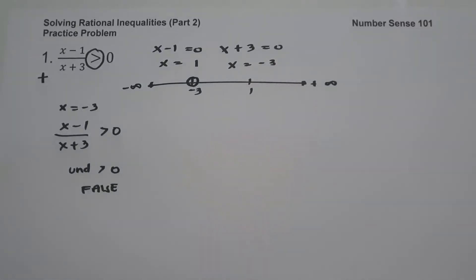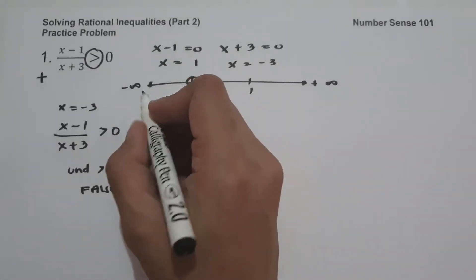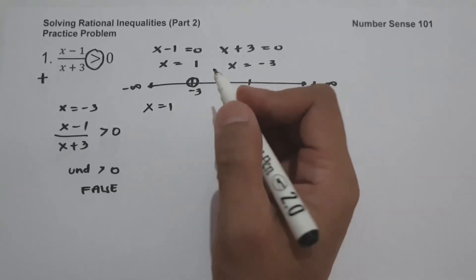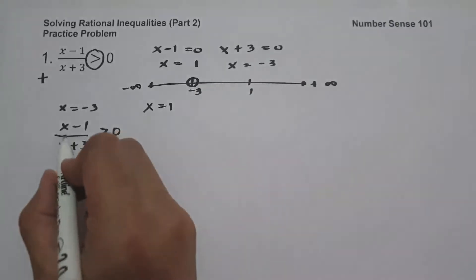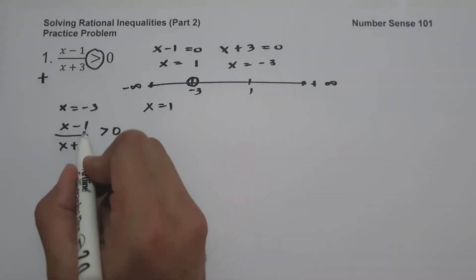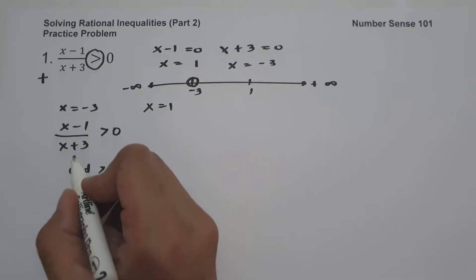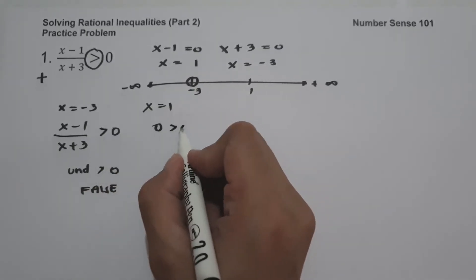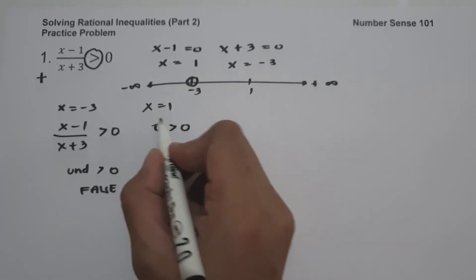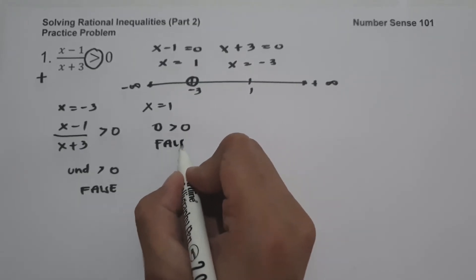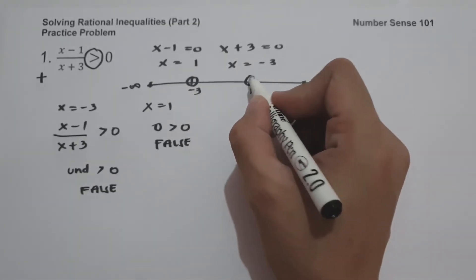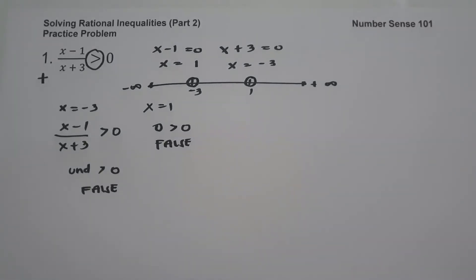That means negative 3 is not included in our solution. Now let's say x equals 1. We have 1 minus 1, that is 0, and 0 divided by an expression equals 0 greater than 0 — so that is false. Positive 1 is not included in our solution, so I'm going to use an open circle.